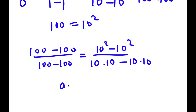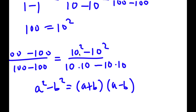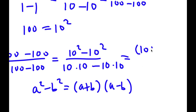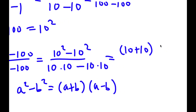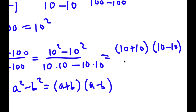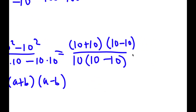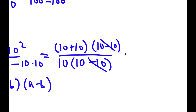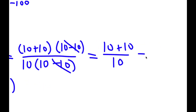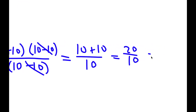If I have something in the form a squared minus b squared, this equals a plus b times a minus b. So here I have 10 squared minus 10 squared, which equals 10 plus 10 times 10 minus 10. From the denominator, I'm going to factor out 10, giving 10 times 10 minus 10. I cancel those out, leaving 10 plus 10 over 10, which equals 20 over 10, which equals 2.